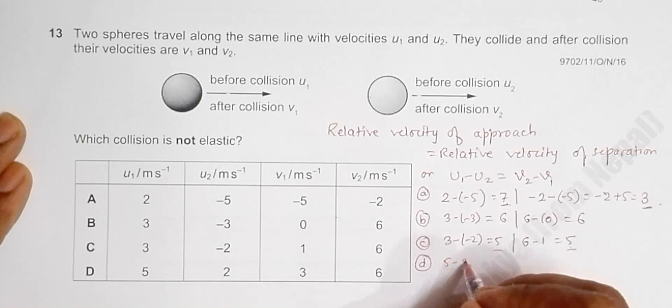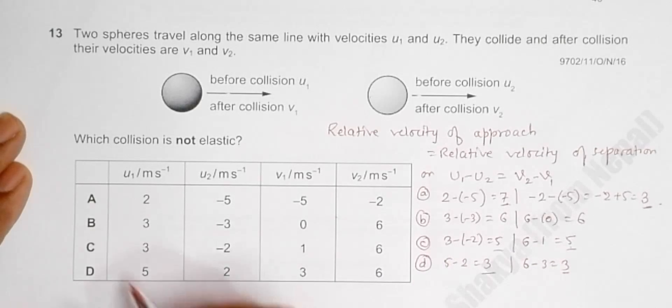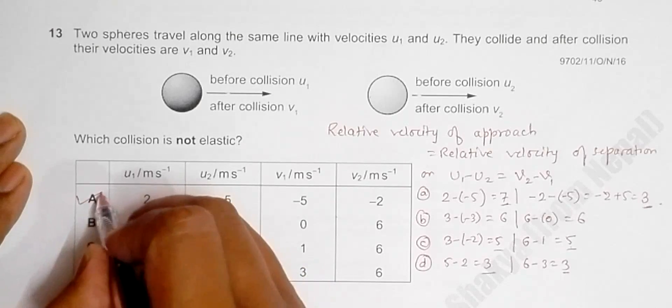For D, we'll have 5 minus 2, equal to 3, and then 6 minus 3 is equal to 3. Again equal. So A is the correct choice for this question.